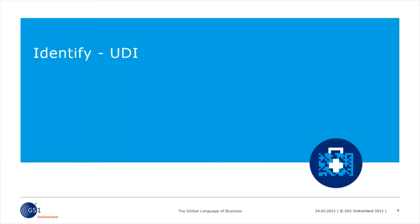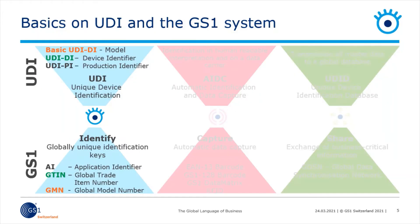Let's move to the chapter Identifying the UDI. We will start with Identify, or the identification key of the GS1 system to create the UDI. In order to create a uniform basis, we must first learn the basics of the GS1 system.